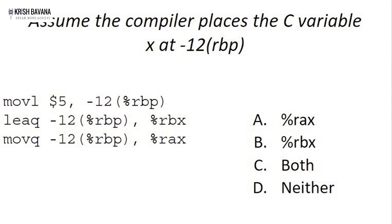RBX stores the pointer. Next is creating a pointer: in C, an ampersand before x creates a pointer to x. In assembly, lea -12(%rbp) to RAX means we're loading the address of x — where -12(%rbp) is x — into RAX. So RAX equals the address of x. That's how we create pointers in assembly language.